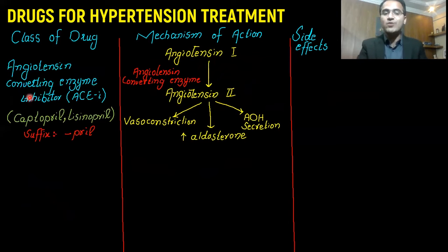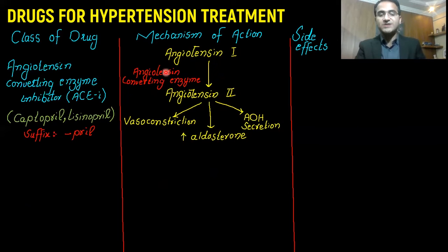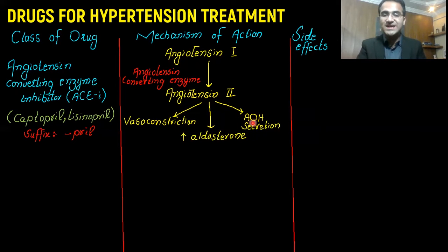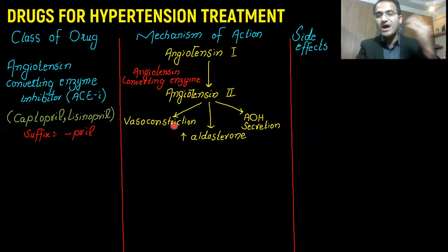Then we have angiotensin converting enzyme inhibitors, or ACE inhibitors, which include captopril and lisinopril — all drugs ending with the suffix 'pril.' The mechanism of action is that angiotensin 1 is converted to angiotensin 2 by the angiotensin converting enzyme. Angiotensin 2 causes vasoconstriction, releases aldosterone, and causes ADH secretion — all of which lead to vasoconstriction, fluid and salt retention in the body, resulting in high blood pressure.